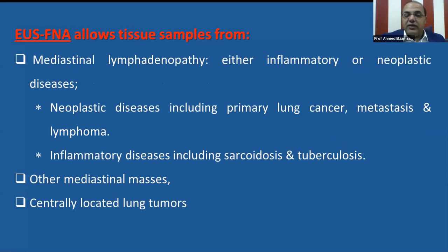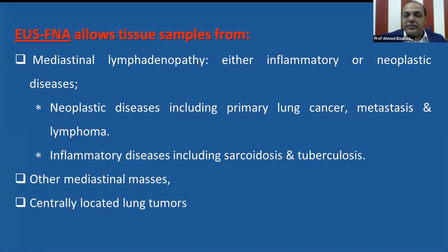Mediastinal pathology may arise from centrally located lung tumors, mediastinal lymphadenopathy which are either inflammatory or malignant, neoplastic disease including primary lung cancer, metastasis, and lymphoma, while inflammatory diseases include sarcoidosis and tuberculosis.